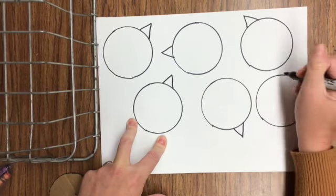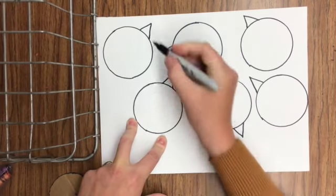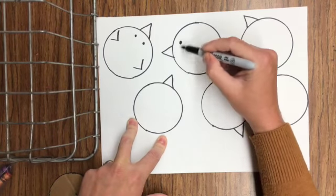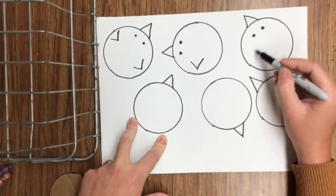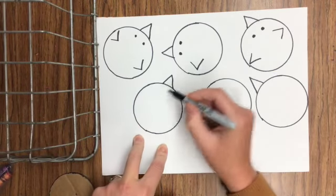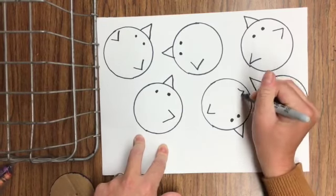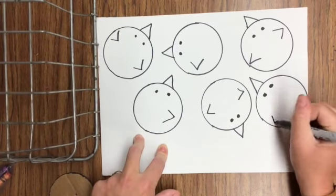Once you get their beaks on, you can go back in and add some wings to them and some eyeballs on your different birds. Their wings and eyes, sometimes I put two wings, sometimes one wing, like they're turned a little bit. It's just kind of up to you how you want to do your birds.